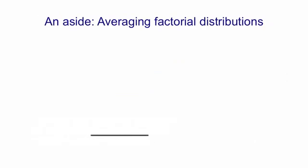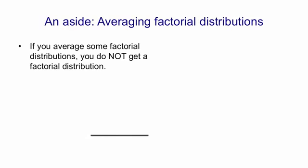Before I explain why stacking up Boltzmann machines is a good idea, I need to sort out what it means to average two factorial distributions. It may surprise you to know that if I average two factorial distributions, I do not get a factorial distribution. What I mean by averaging here is taking a mixture of the distributions — you first pick one of the two at random and then generate from whichever one you picked. So you don't get a factorial distribution.